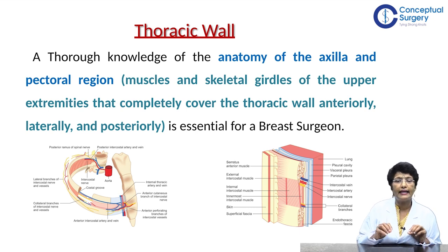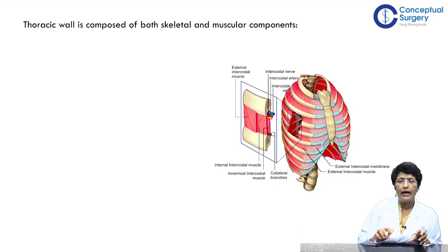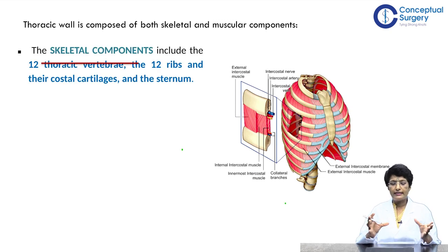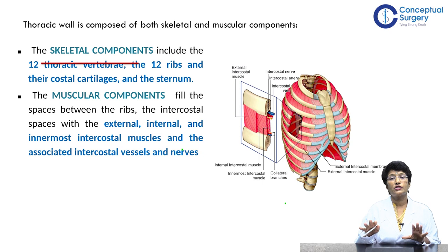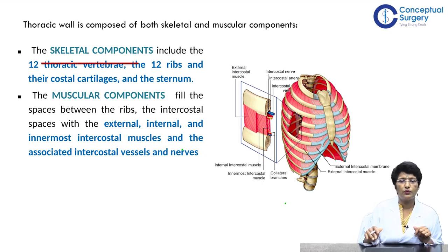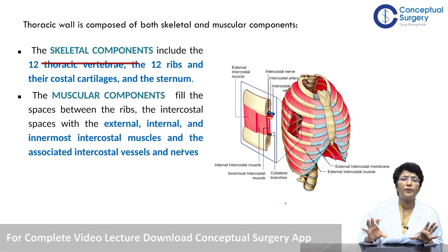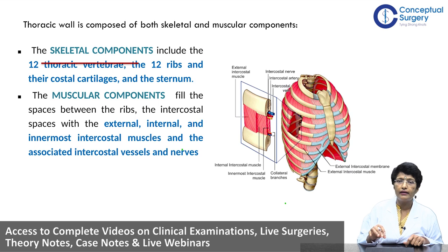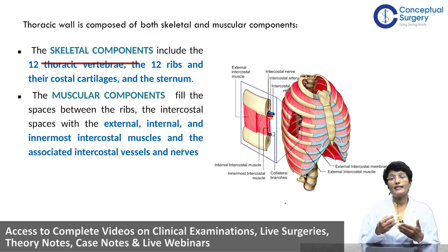You must know the muscles and the skeletal girdle covering the thoracic wall. The skeletal component consists of 12 thoracic vertebrae, 12 ribs, their costal cartilages, and the sternum. The muscular components fill the spaces between the ribs. In the intercostal spaces you have the external, internal, and innermost intercostal muscles along with the associated intercostal vessels and nerves — these vessels are very important to a breast surgeon.